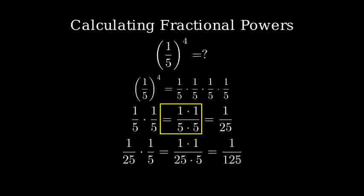Finally, we multiply by the last one-fifth. One times one is one, and one-hundred-twenty-five times five gives us six-hundred-twenty-five in the denominator.